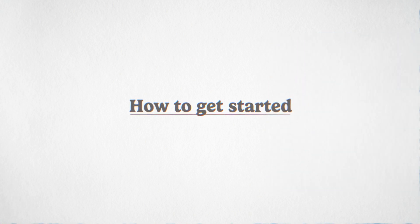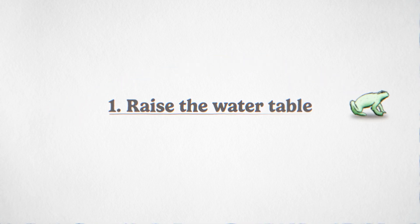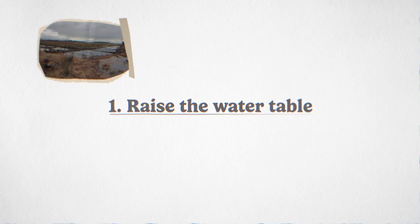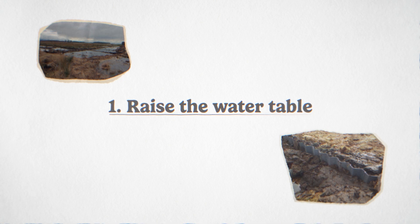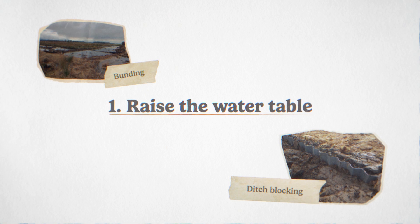So where do you start? Raise the water table. To raise your land's water table, you need to keep water in the ground rather than draining it out. Bunding or ditch blocking is effective here and is particularly good for peat soils.